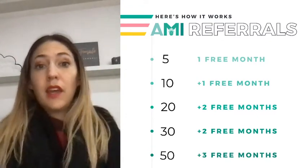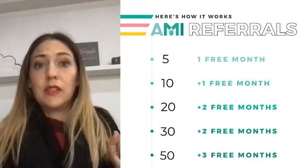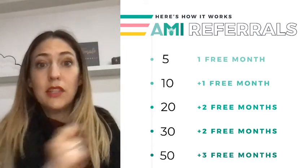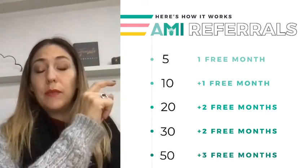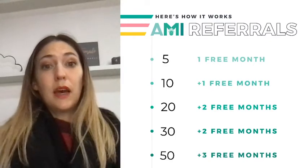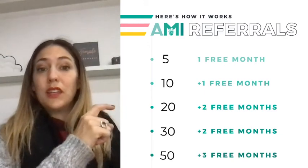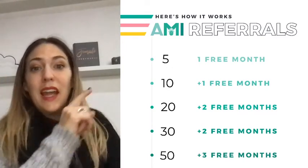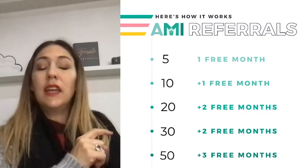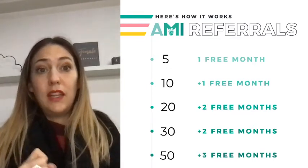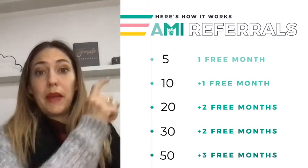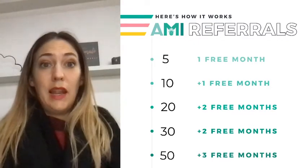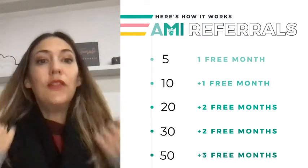If you go from five to ten — sharing with another five individuals who download the app and create an account — you get an additional free month. These are cumulative: that's one, then two free months. At 20 referrals it bumps up to two additional months, so that's four free months total. Then two free months at 30, and three free months at 50 referrals. That's up to nine potential months of free Amy Pro — super cool!